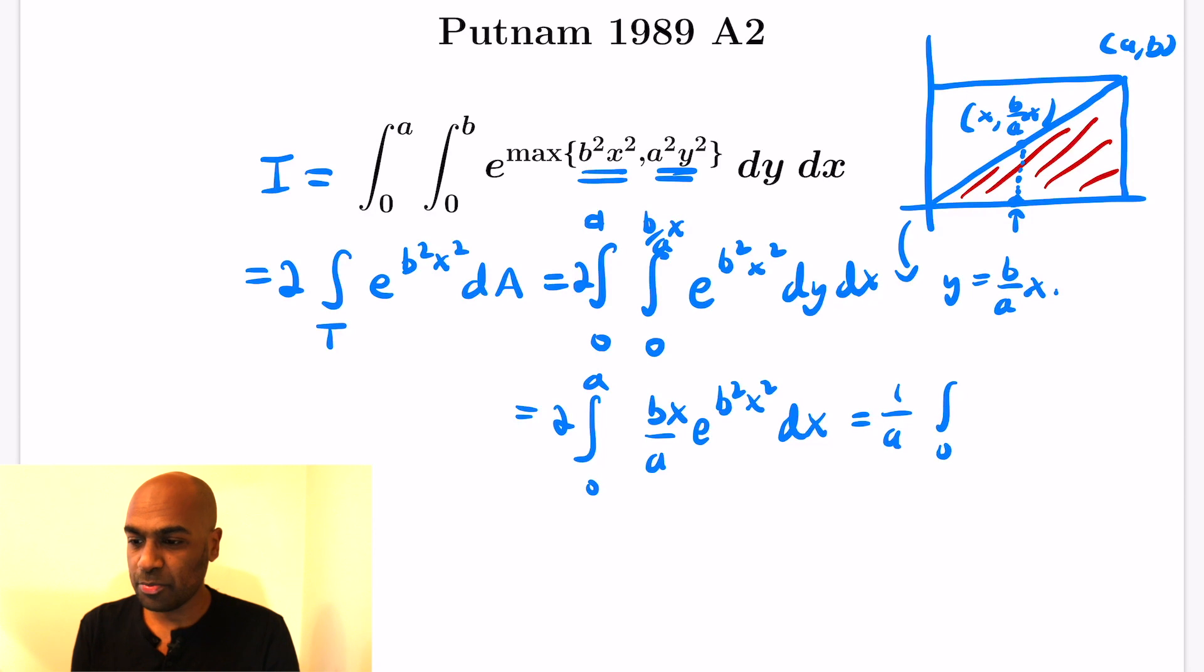If we actually do this, let's pull the 1 over a out. We get the integral from 0 to a of 2bx e to the b squared x squared dx. And then we can actually find the integral for this using again the fact that the exponent's derivative is given to us there. We have this extra b that we need to take care of.